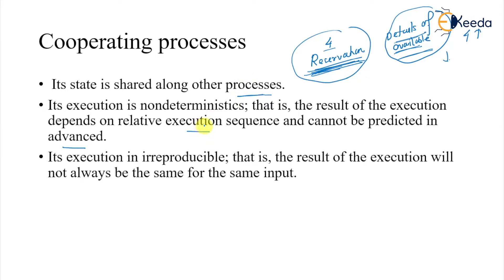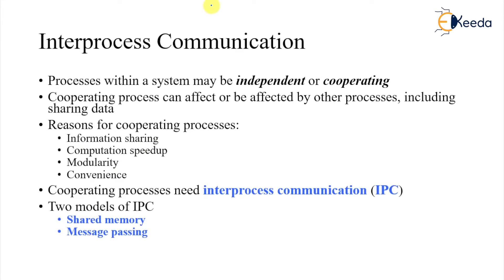Because of this relative sequence of execution, you cannot say the result will always be the same. Its execution is irreproducible — the result will not always be the same for the same input, since it totally depends on availability. For these cooperating processes, we require communication between them, and that communication is called inter-process communication (IPC).